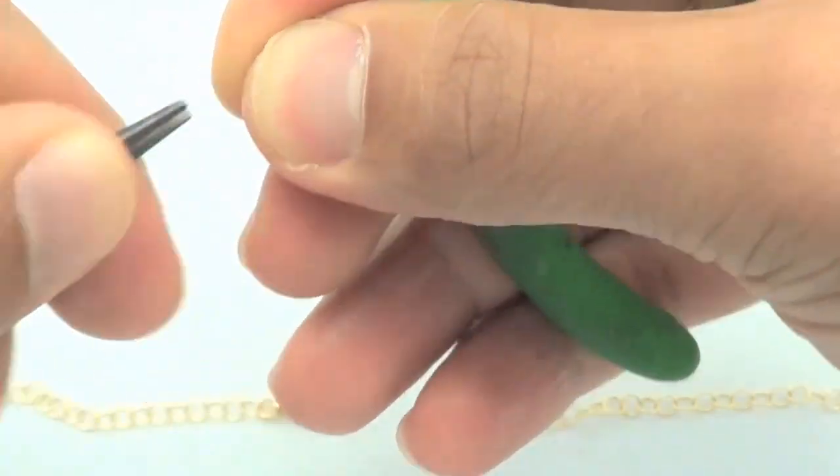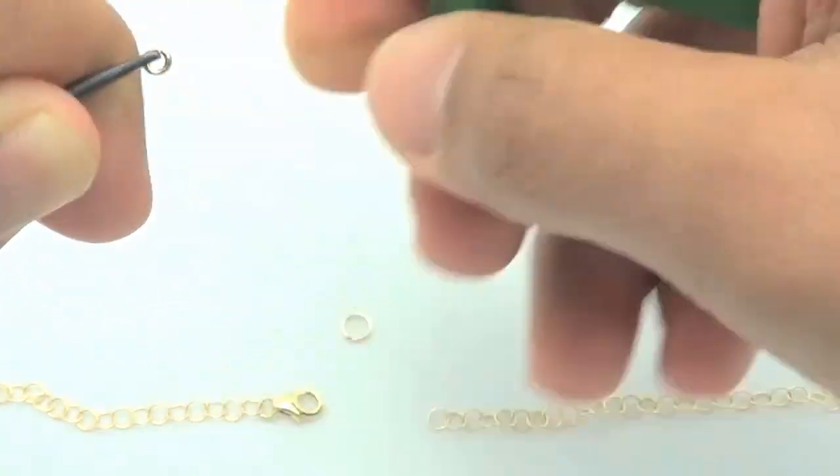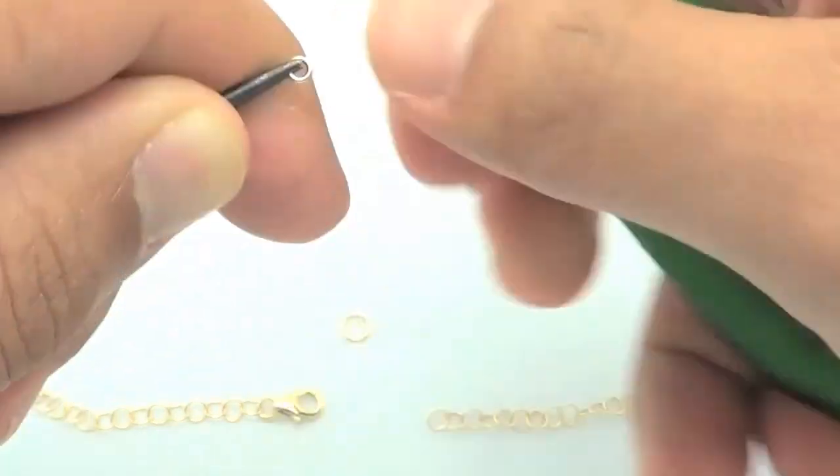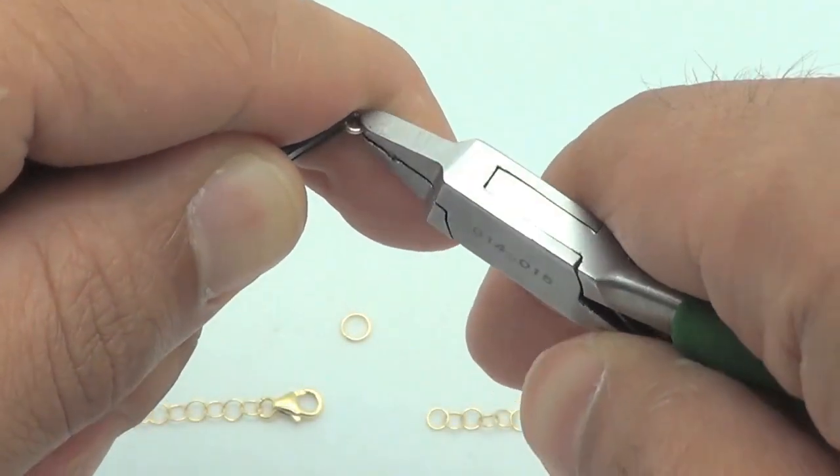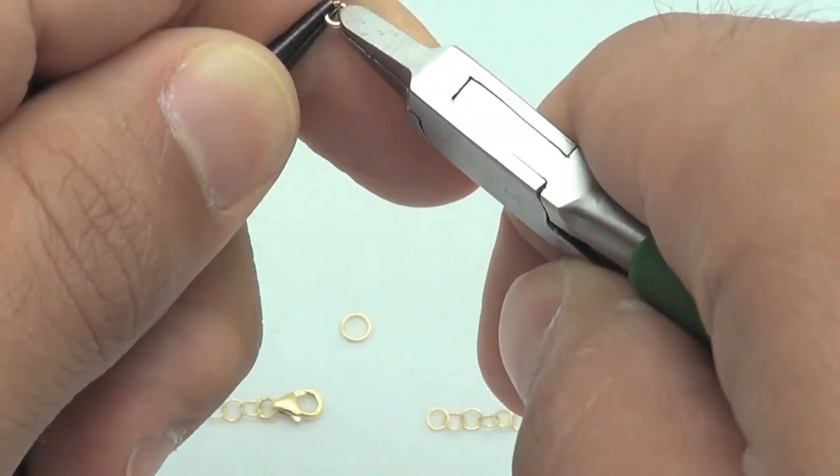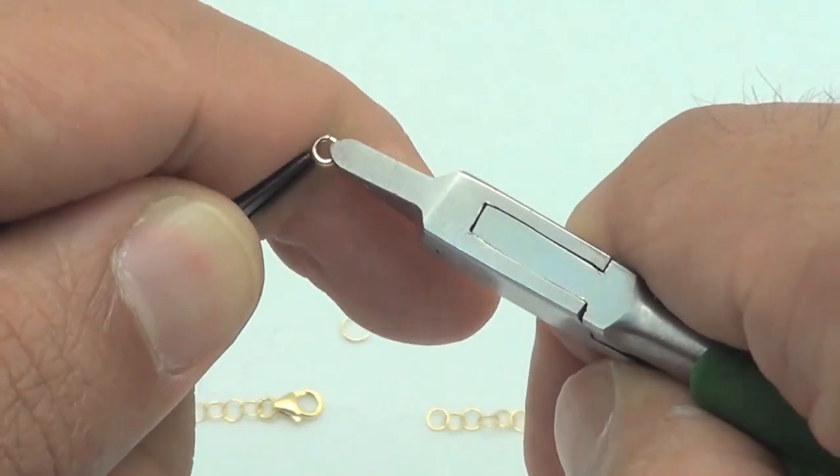Since we're not going to solder these jump rings, I'm using a large closed jump ring on the side opposite the lobster and attaching it to the chain with a small thick jump ring. Notice how much thicker this one is. The thicker the jump ring, the stronger it'll be.